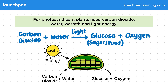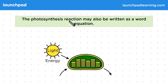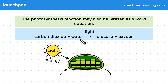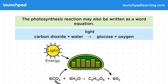How can photosynthesis be represented with an equation? The photosynthesis reaction may also be written as a word equation: carbon dioxide and water with light make glucose and oxygen. Light appears above the arrow rather than as part of the reaction because it is neither a reactant nor a product, but it is needed for this reaction to take place. This word equation can also be written as a symbol equation: carbon dioxide plus water makes glucose and oxygen. The sixes in front of the carbon dioxide and the water mean that six of each are needed to produce one molecule of glucose, with six molecules of oxygen produced as a waste product.